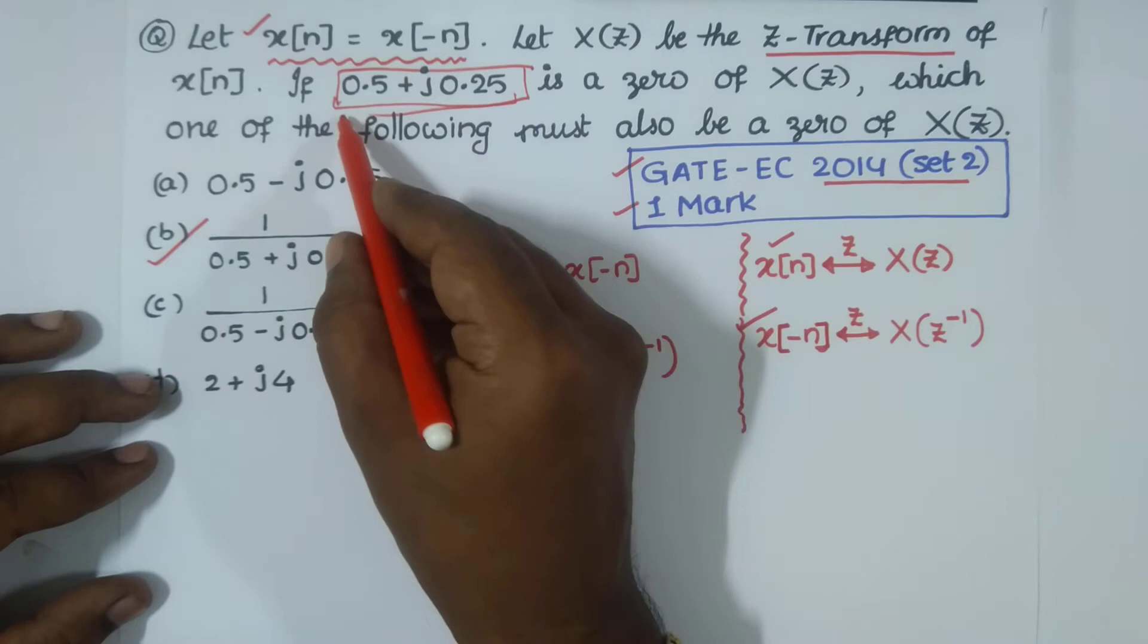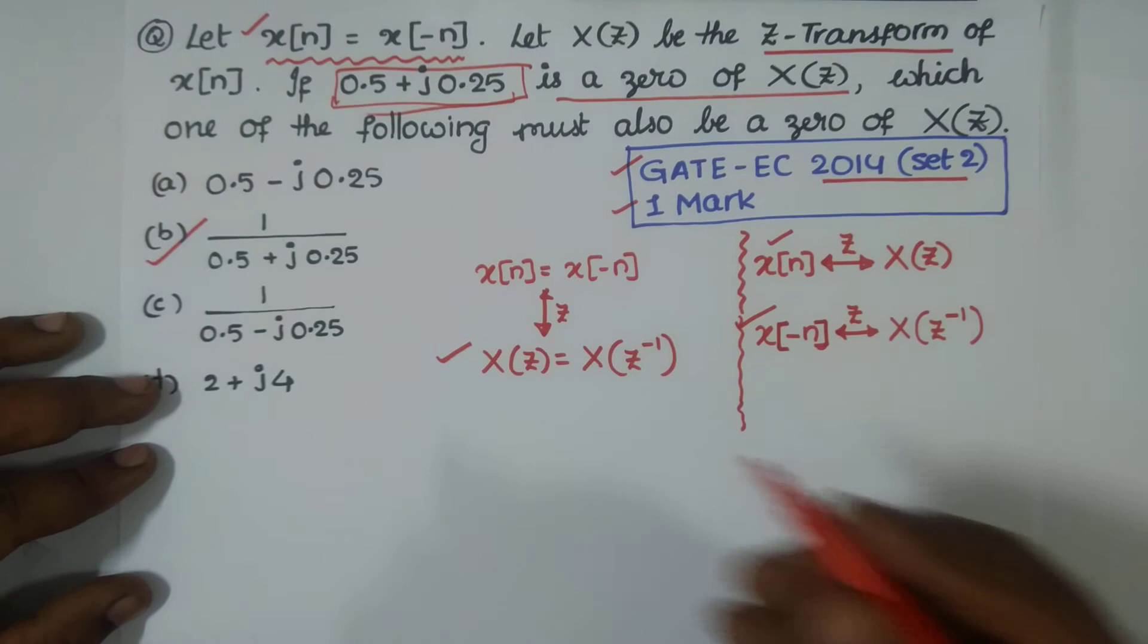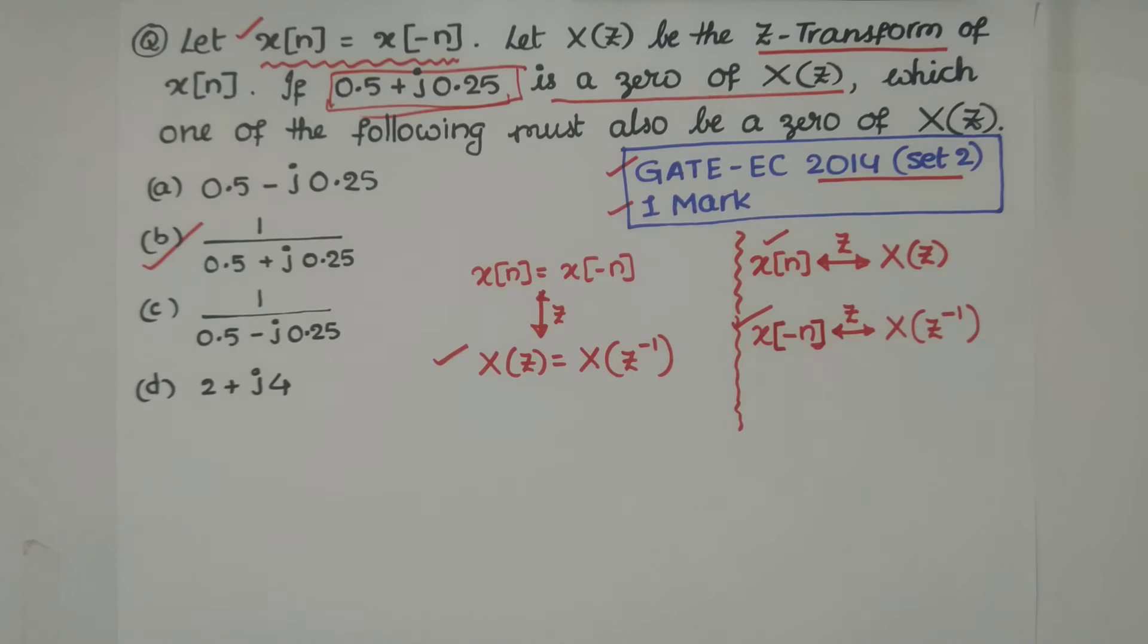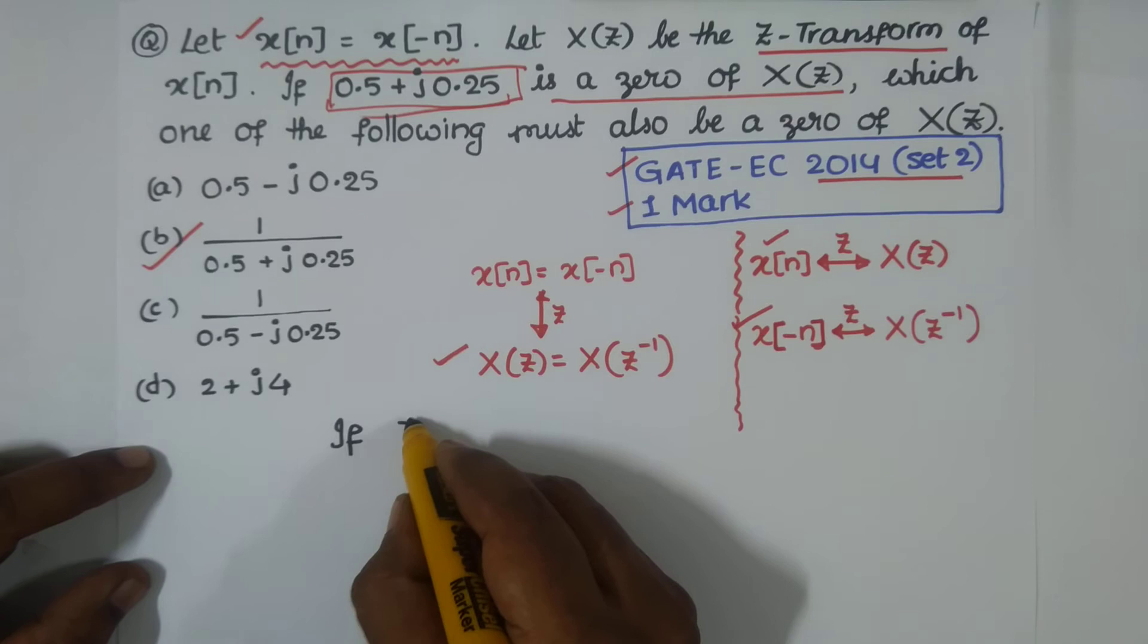We can write like this: let me take some Z_0.